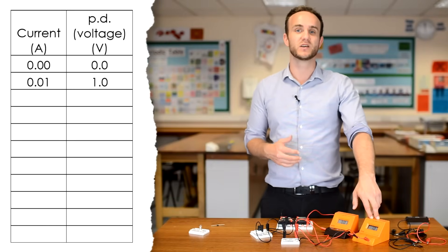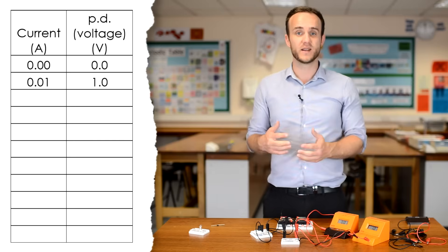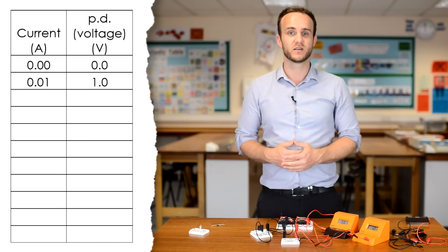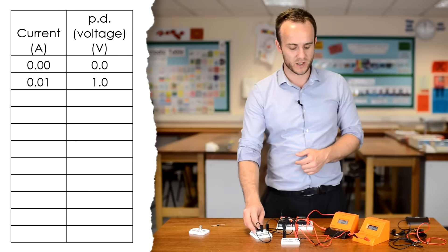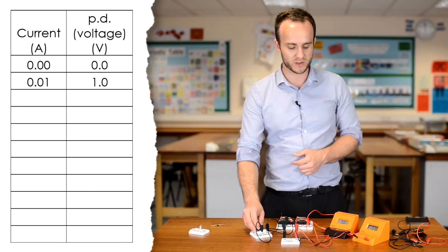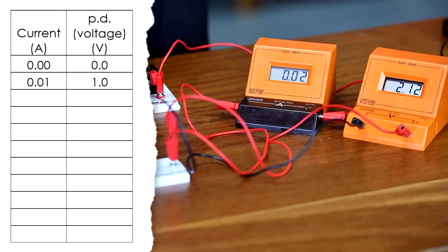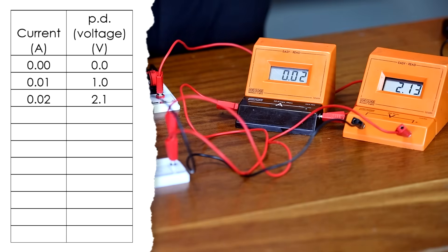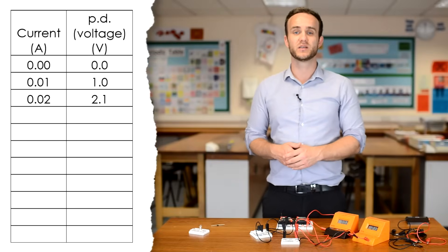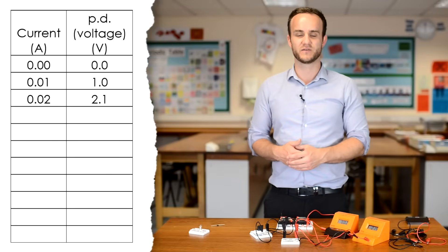Let's go to one decimal place with our voltage or our potential difference. Next, I'm going to increase the current using the variable resistor to 0.02 amps. Again, making sure that it doesn't fluctuate, that it's staying at 0.02. I now have a PD of 2.1 volts to one decimal place. You're going to carry on increasing the current until you get five readings.